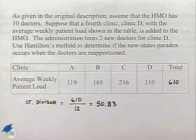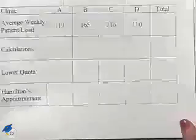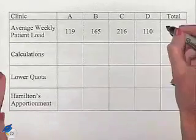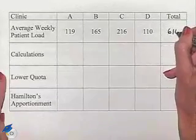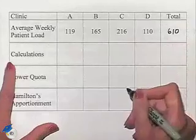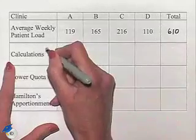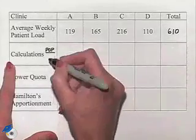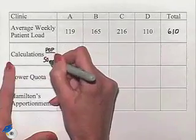Now, let's go to the following table, and we're going to fill it in using Hamilton's method. Again, we have our total of 610. We are going to take our populations, and in each case divide by the standard divisor. And remember, that was 50.83.